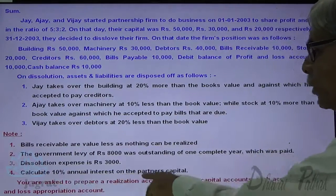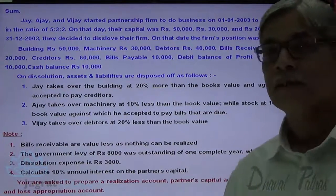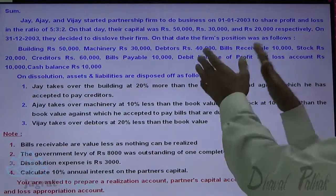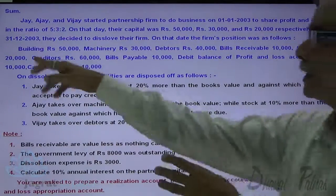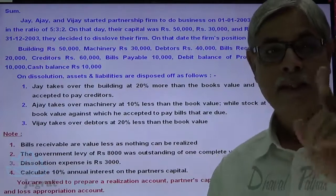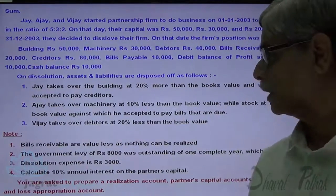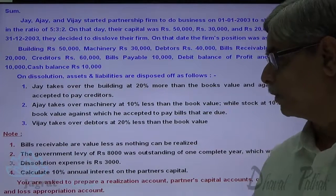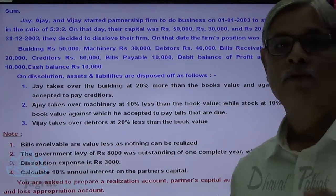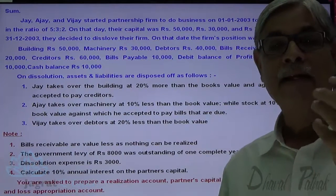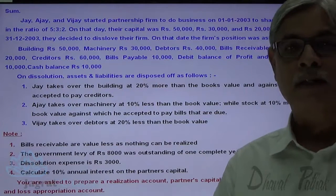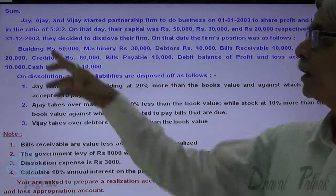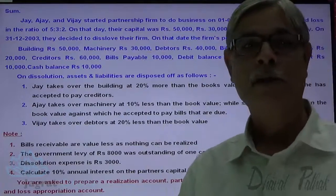Calculate 10% interest on partner's capital. Notice that the debit balance of the profit and loss account of 10,000 is already there, but the interest payable to partners has not been taken into consideration. So we are required to prepare a profit and loss appropriation account to find out the net divisible loss among the partners, which will be distributed in the profit sharing ratio of 5:3:2.